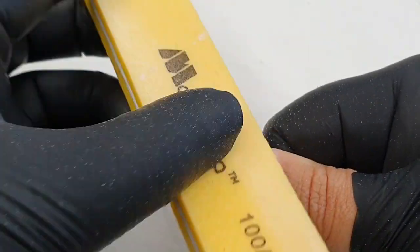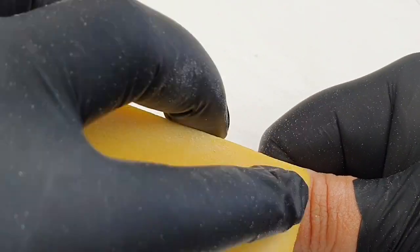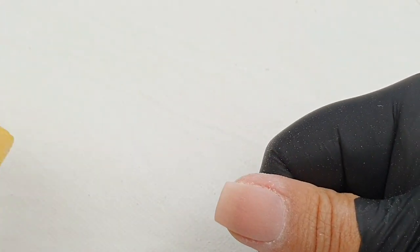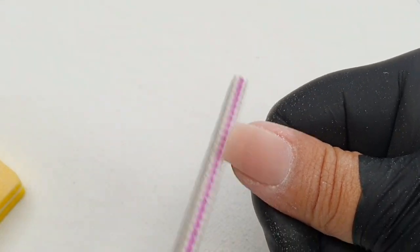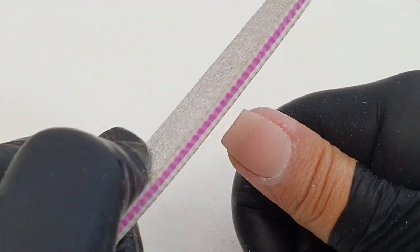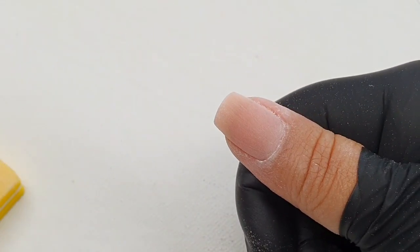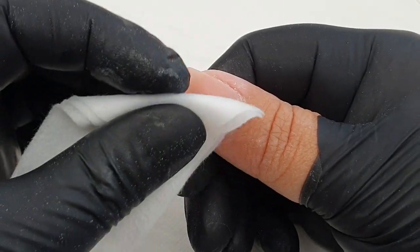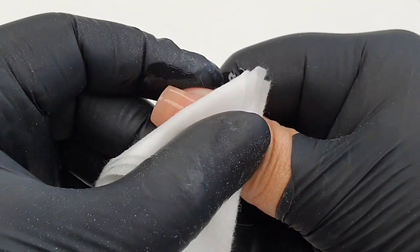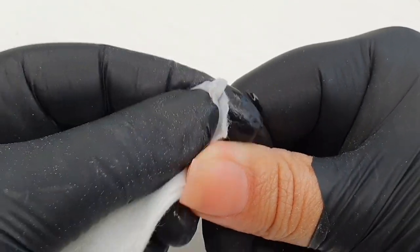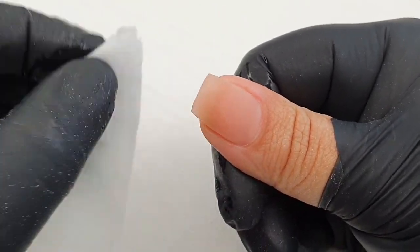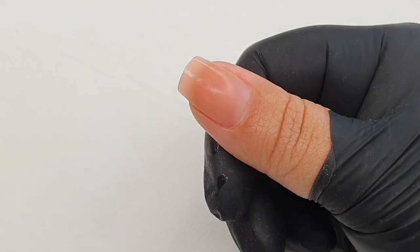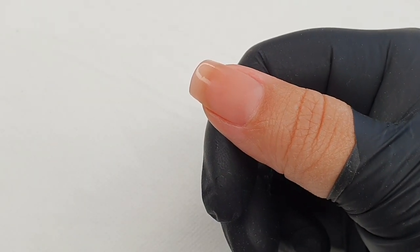Once you're done with the buffing, you're going to use some cleanser and clean that surface off to get rid of any dust or imperfections left behind. Once I'm done with my buffing and final shaping, I use cleanser to wipe all the dust from the surface. This prevents you from getting dust into your top coat bottles and prevents cross-contamination.